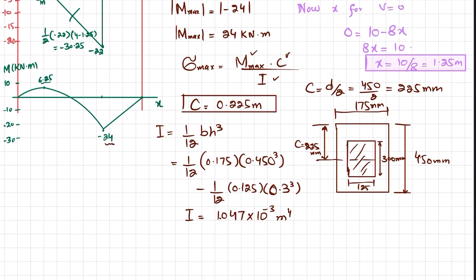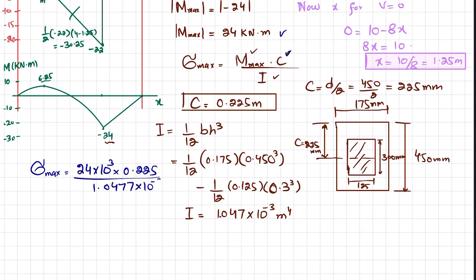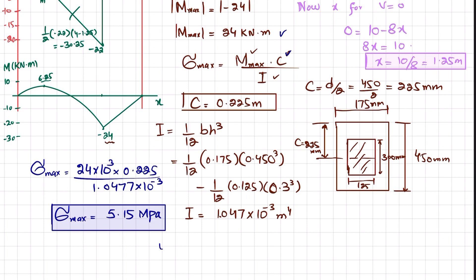Now substituting all values, the maximum bending stress equals the maximum bending moment of 24 kilonewtons-meters (24 times 10³) multiplied by c (0.225 meters), divided by I (1.047 times 10⁻³ m⁴). Calculating this gives a maximum bending stress of 5.15 megapascals. This is the answer to problem 6-100.